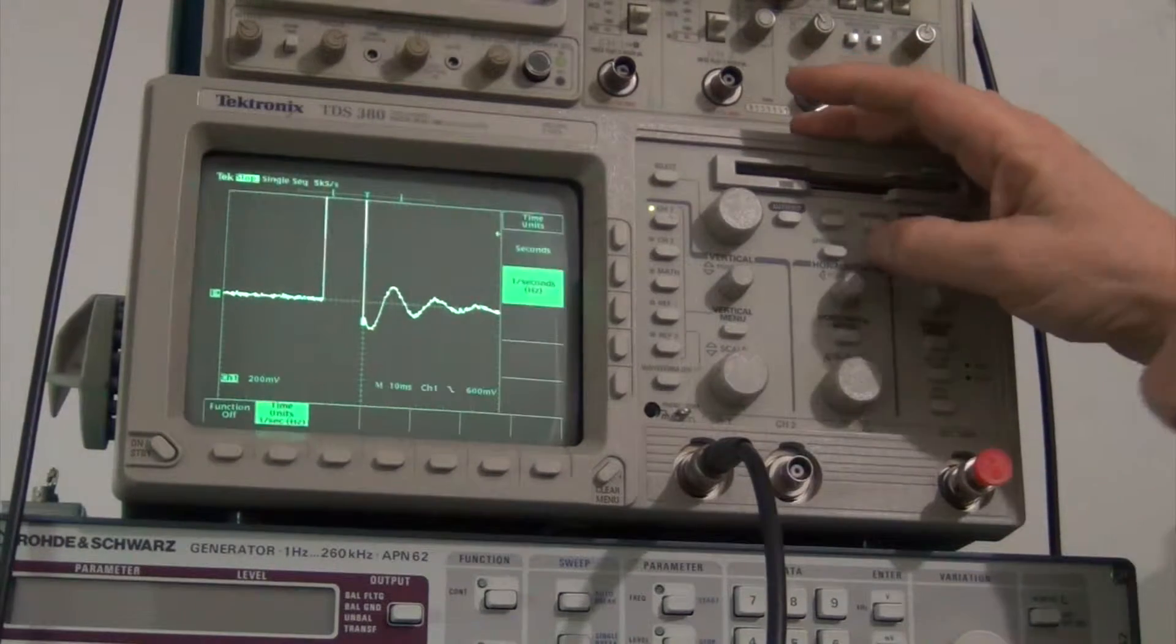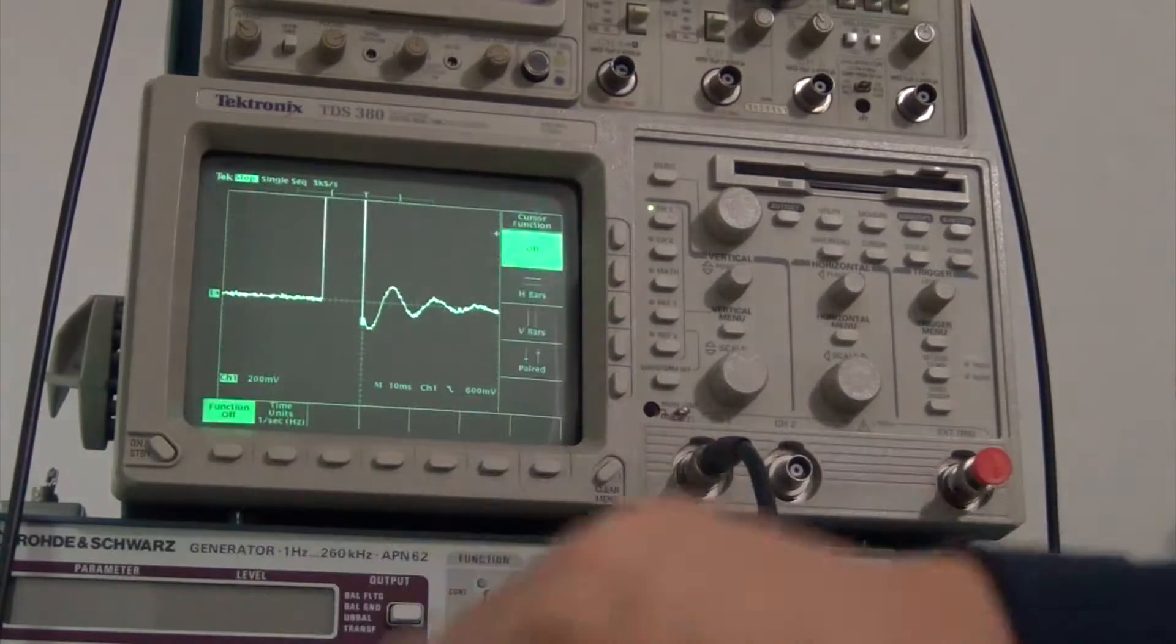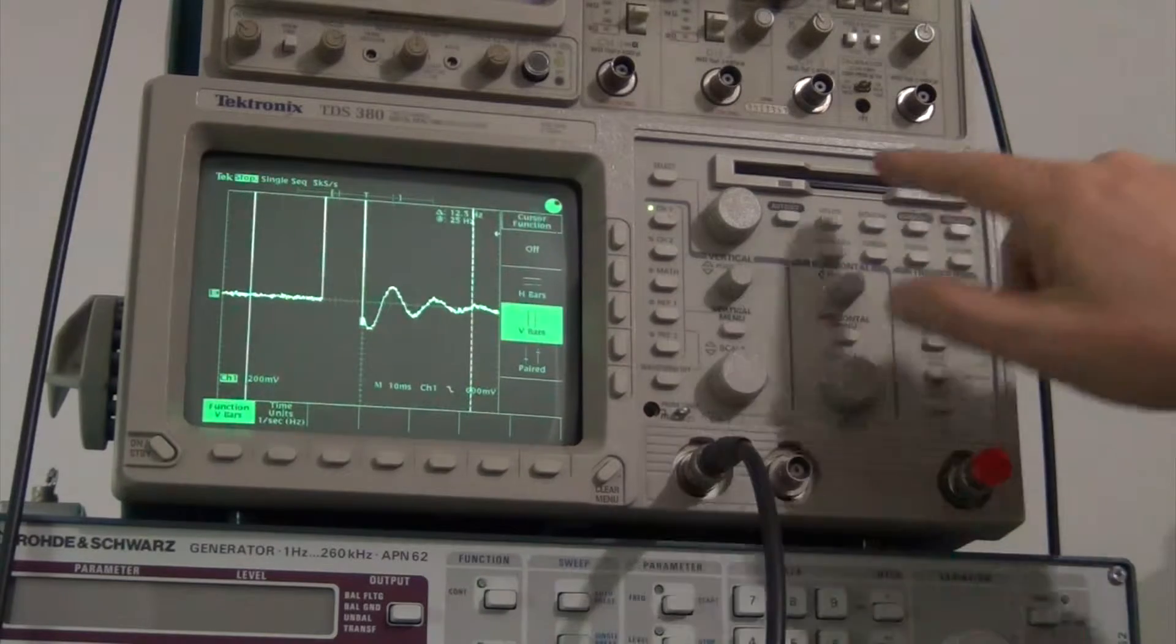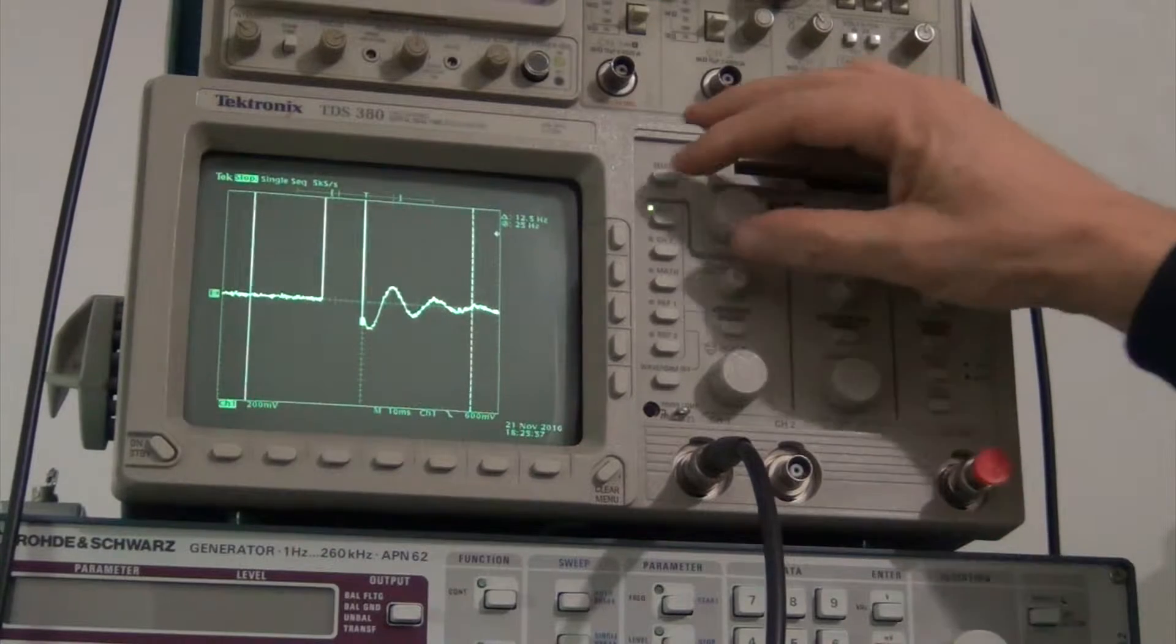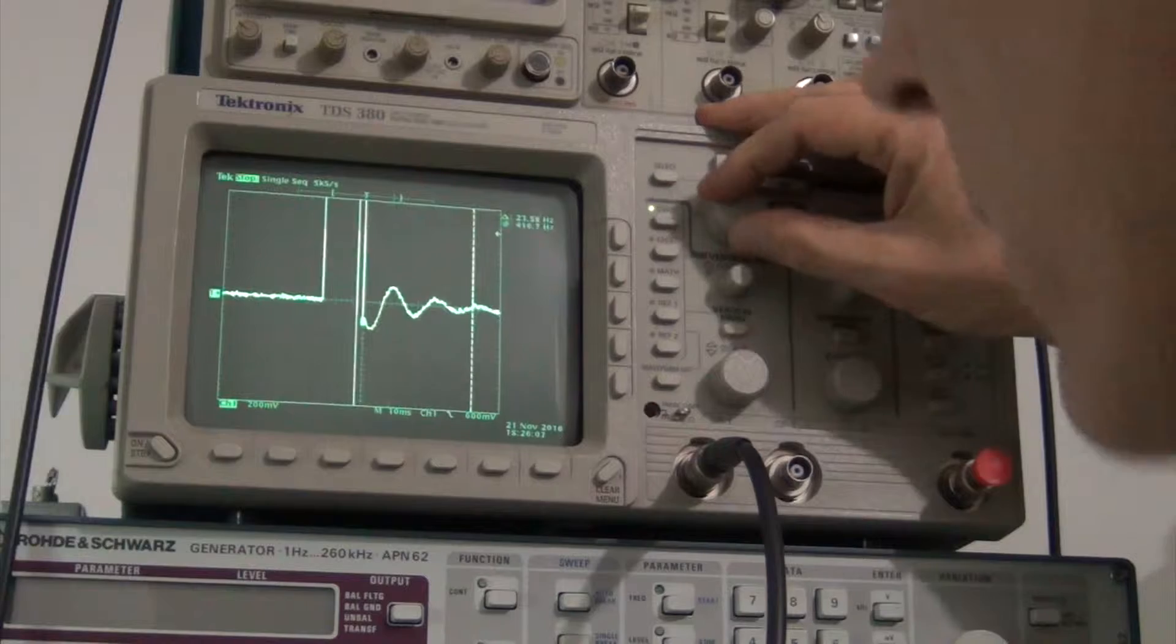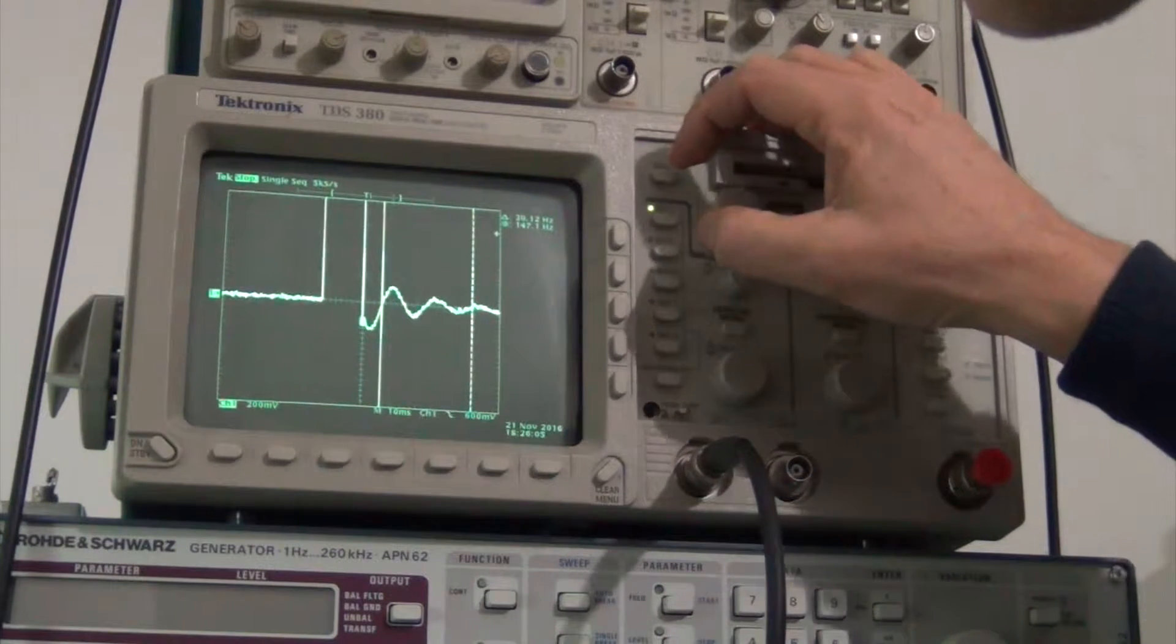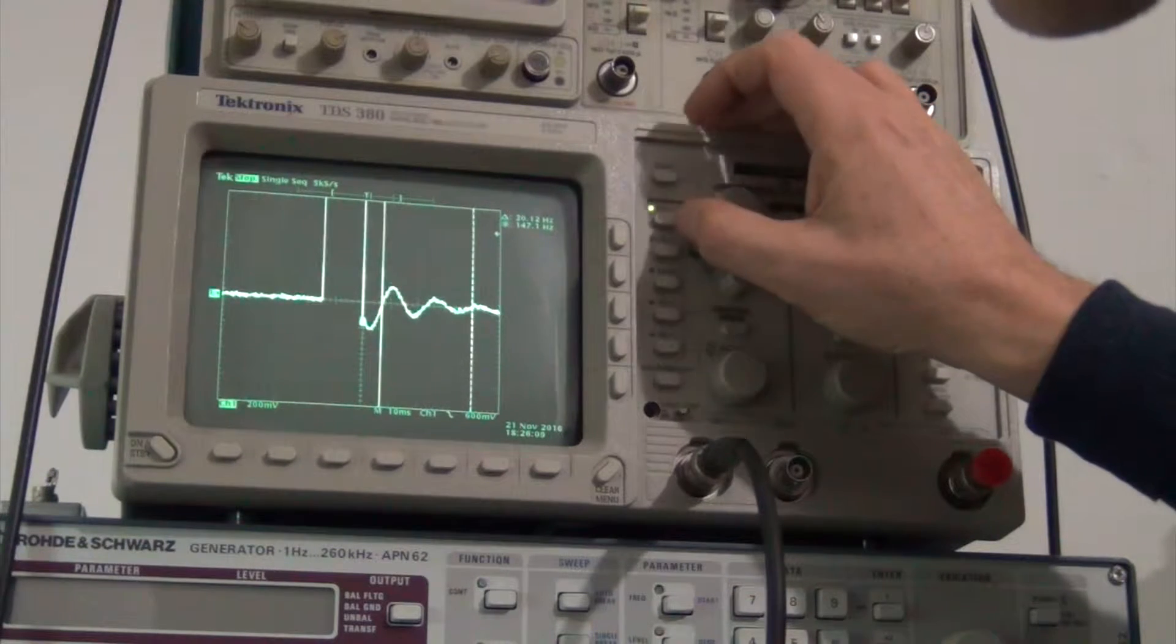And we will see what happens. Okay, cursors. Function on, function off, horizontal bar, so we can see the frequency. Okay. And then we move this one to the beginning of the sine wave after the falling front of the square wave, here.